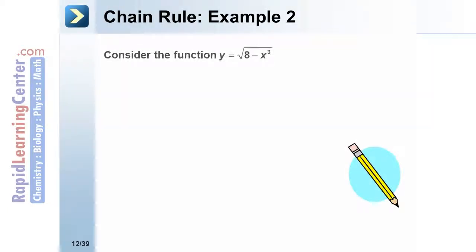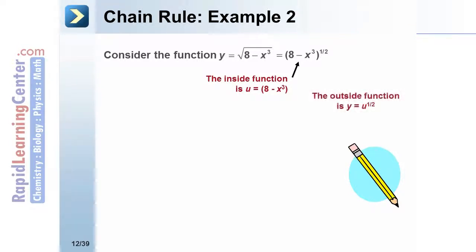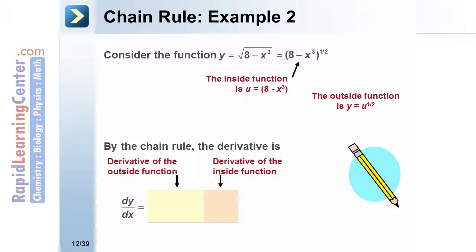Let's look at another example of the chain rule. Consider y equals the square root of 8 minus x cubed. We rewrite this as the quantity 8 minus x cubed raised to the 1/2 power. The inside function is u equals 8 minus x cubed, and the outside function is y equals u to the 1/2 power. The derivative of the outside function is 1/2 times the quantity 8 minus x cubed to the negative 1/2 power, while the derivative of the inside function is negative 3x squared. Simplifying gives us negative 3/2 x squared times the quantity 8 minus x cubed to the negative 1/2 power.